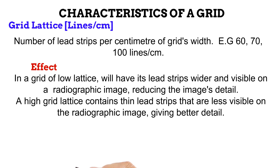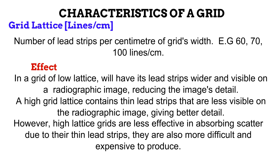On the other hand, a grid with high lattice has thinner lead strips that are less visible on the image, giving it better detail. However, the thin strips of high lattice grids make them less efficient at absorbing scattered photons, and some scatter bypasses these thinner strips. Another disadvantage of high lattice grids is that they are more difficult to produce, making them more expensive.